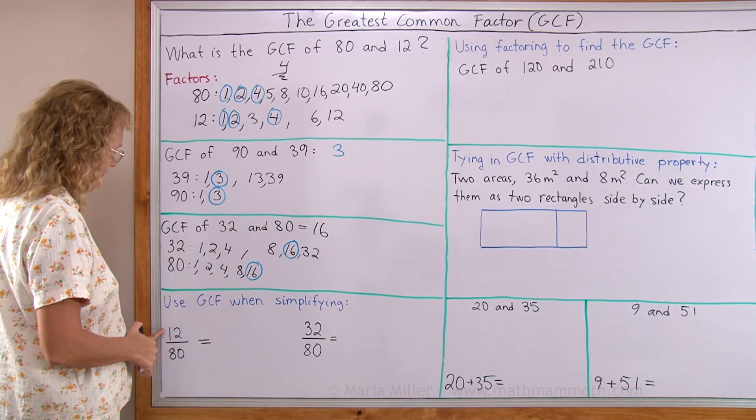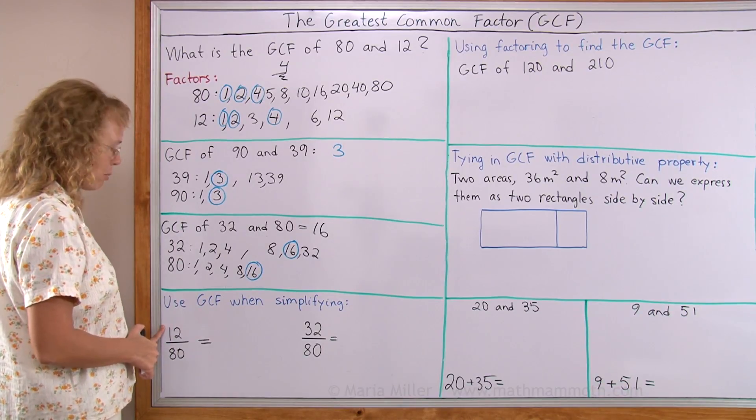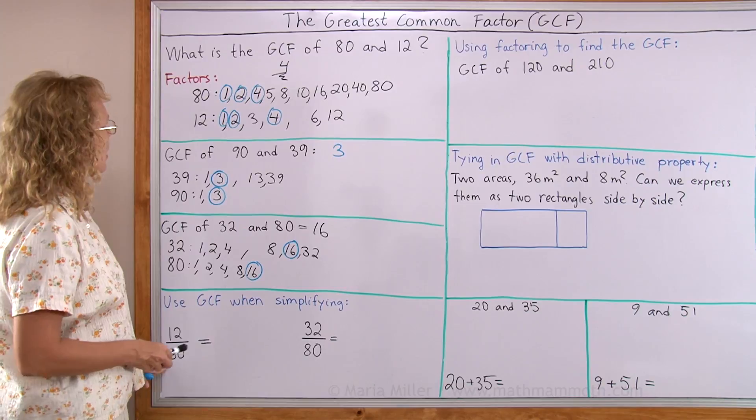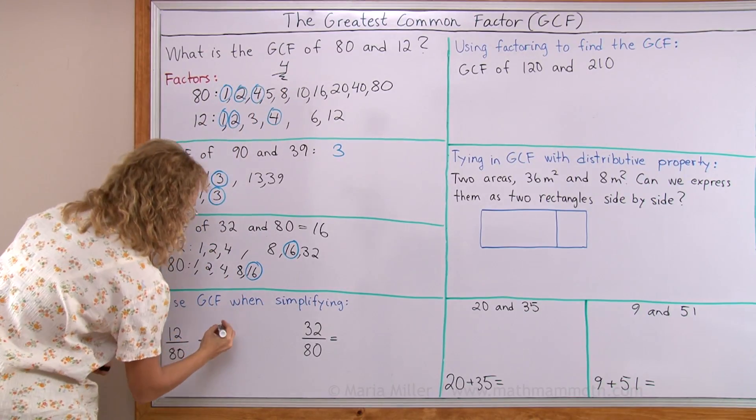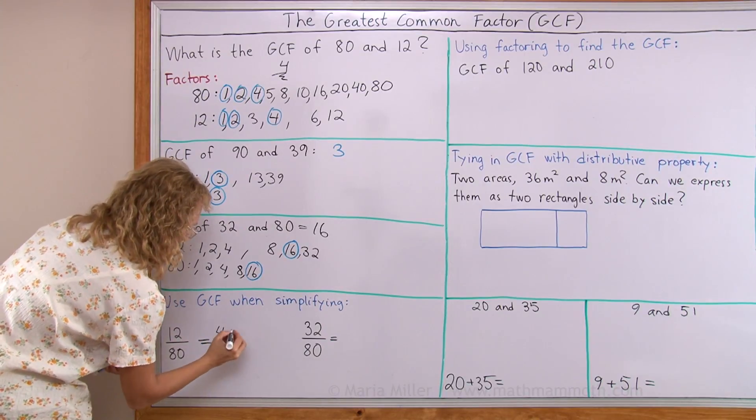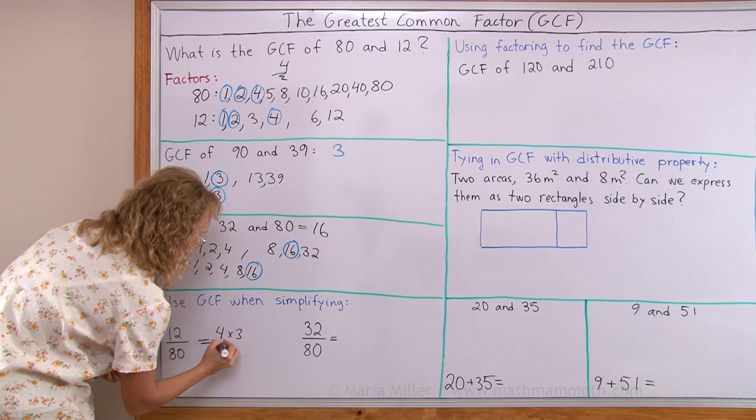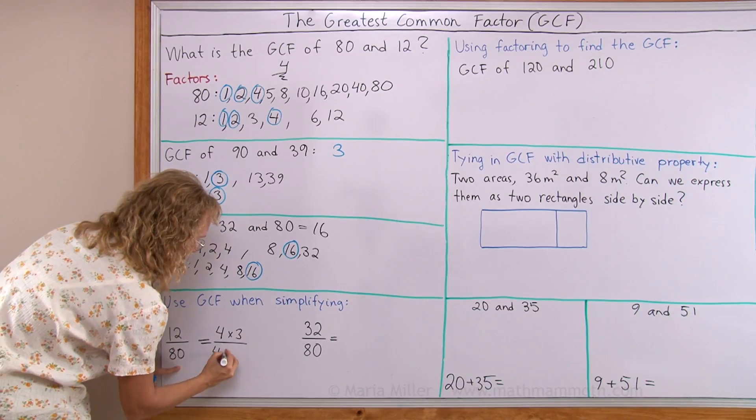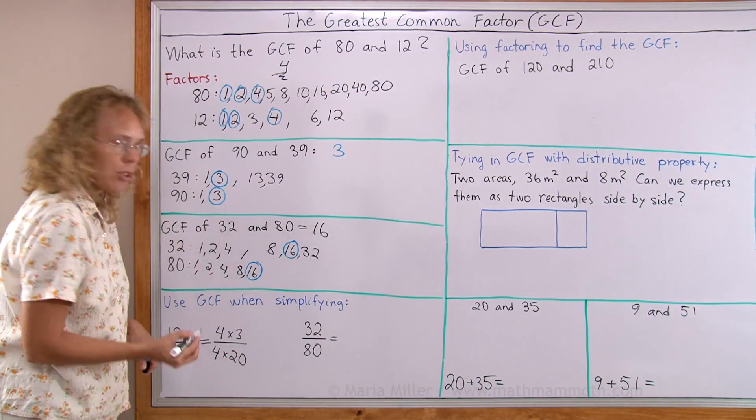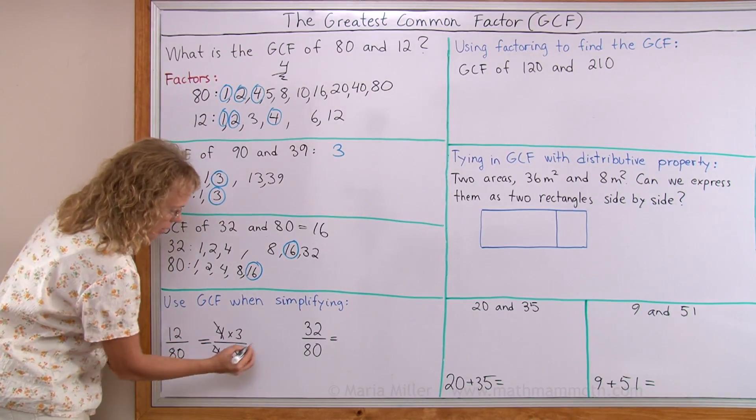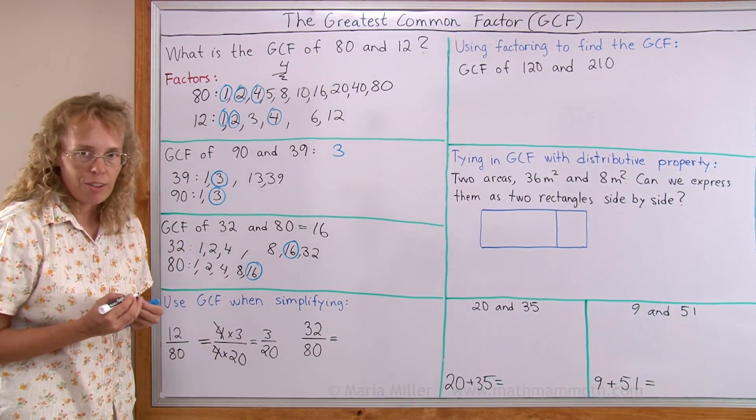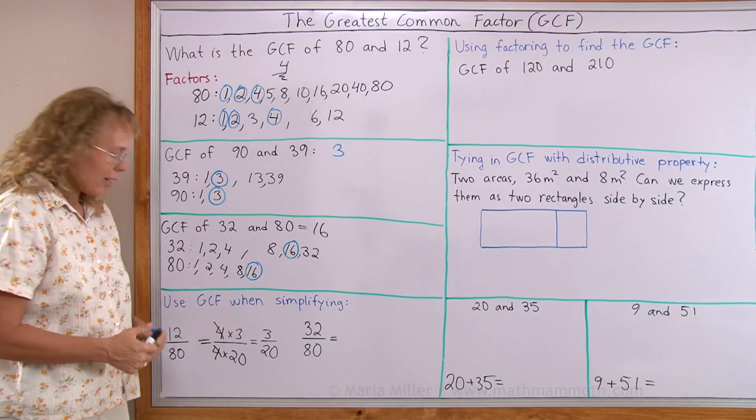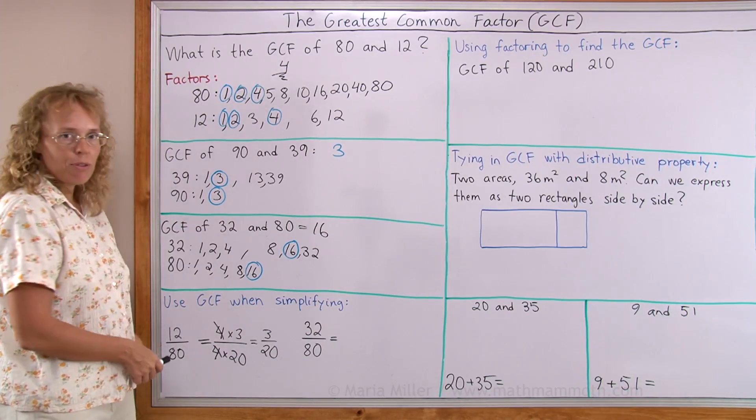Like, for example, 12 divided by 80, or 12 over 80. Already solved what the GCF is—it's 4. So, if I write here, 12 is the same as 4 times 3, and 80 is 4 times 20. So now, when I'm simplifying, the 4s cancel, and I'm left with 3 over 20, and it does not simplify any further. The best I can do when simplifying is by dividing both numbers by 4.